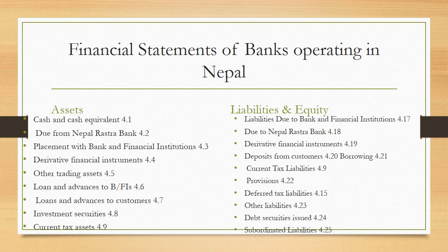Let's see the financial statement of banks operating in Nepal under the NFRS standard, which is recently published by the NRB. On the assets side, there are: cash and cash equivalents, due from Rastra Bank, placement with banks and financial institutions, derivative financial instruments, other trading assets, loans and advances to banks and financial institutions, loans and advances to customers, investment securities, and current tax assets.